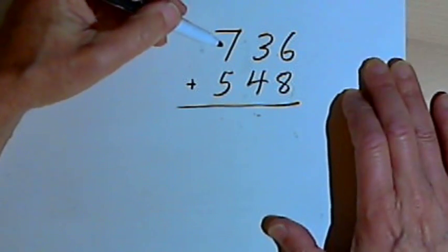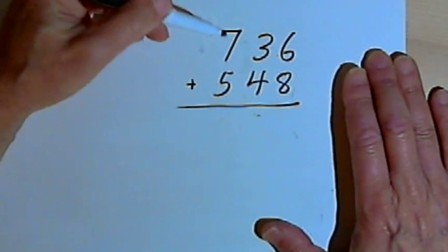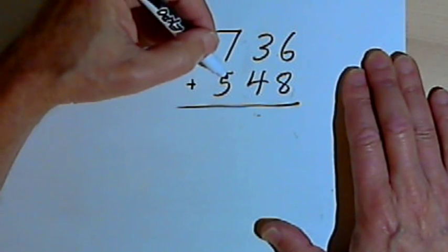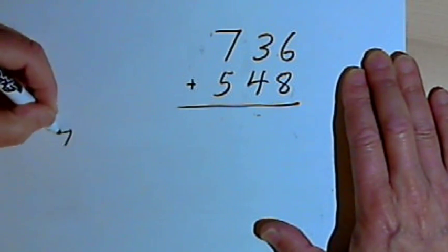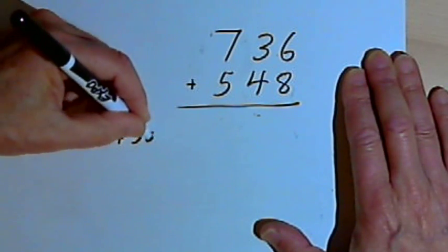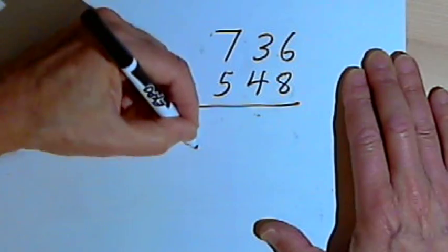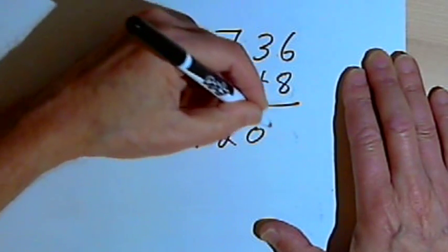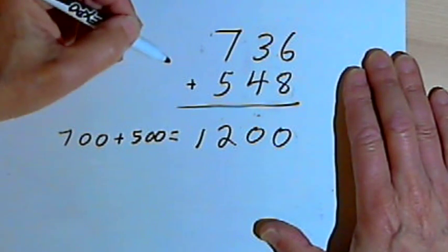I'm going to start in the hundreds column on the right side of each number. I've got a 700 and a 500. So I'll add up 700 plus 500. That's going to give me 1,200. And I'll write that down underneath the original problem.